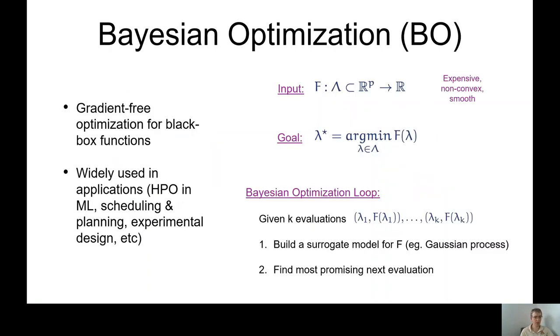What we will use here is Bayesian optimization. Bayesian optimization is a well-established technique for optimizing black box functions that are expensive to evaluate. It is widely used for hyperparameter optimizations in machine learning and other fields. It's a big area of active research and here I'm just going to give a very brief introduction.